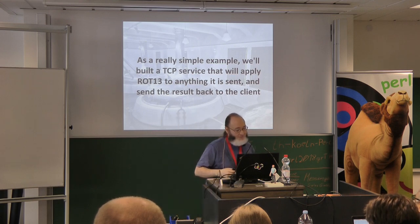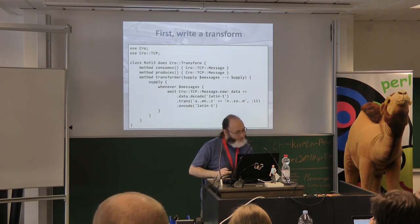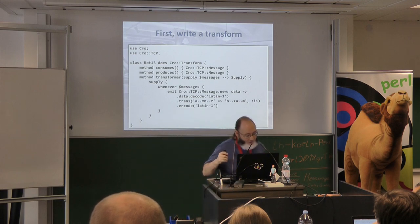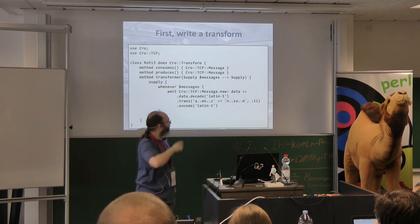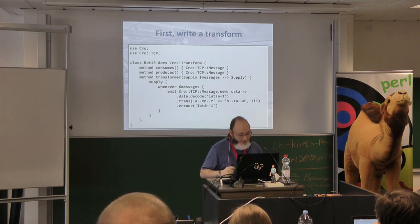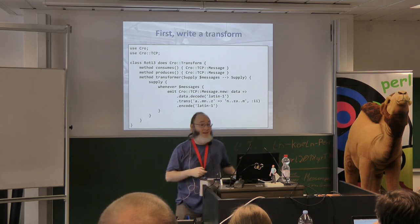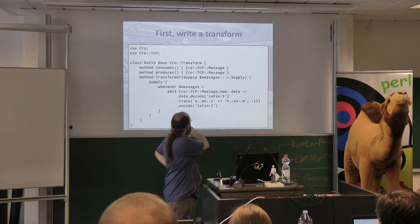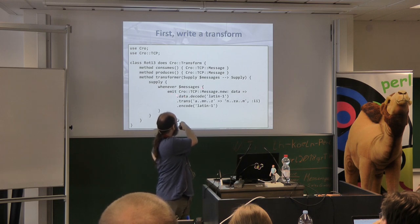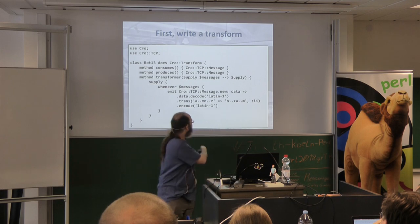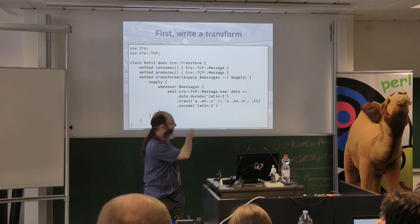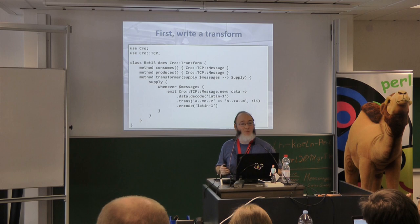Let's build the simplest possible thing: a TCP service that just rot13's anything we send it and sends it back. I'll 'use Crow' and 'use Crow::TCP', and write a component — a transform. This transform consumes TCP messages and produces new TCP messages. The transformer is written as a supply block: whenever we receive messages, I emit a new message whose data is the incoming message's data decoded as Latin-1, rot13'd, then re-encoded.